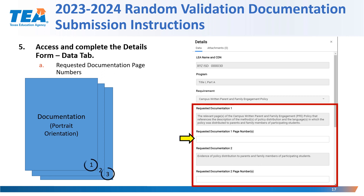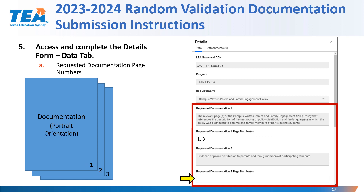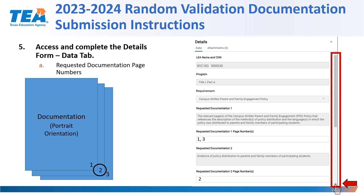For example, if documentation for requested documentation one is found on pages one and three, you would note one and three under the requested documentation one page numbers. If your requested documentation two is found on page two, then you would note page two under requested documentation two. Please note that you will also need to scroll down to access the additional information on the details form data tab.